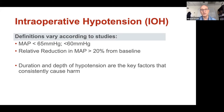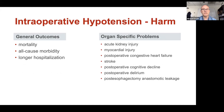Less than 60 had been originally used, and we also talk about a relative reduction in mean arterial pressure greater than 20% from baseline. But the key message across all studies is that it's the duration and depth of hypotension which are the key factors that consistently cause harm.